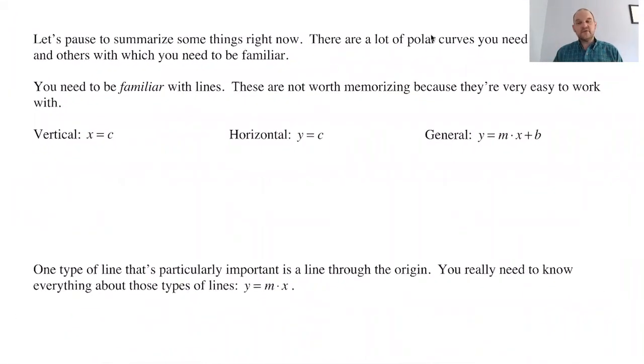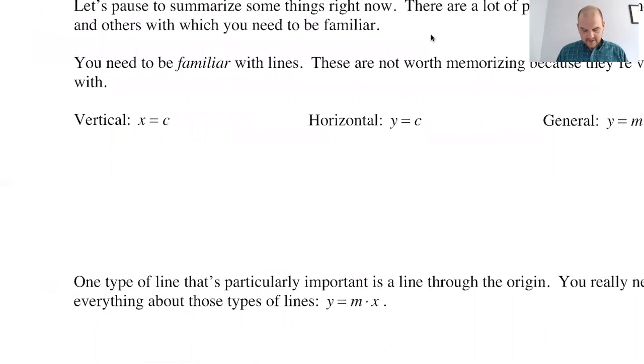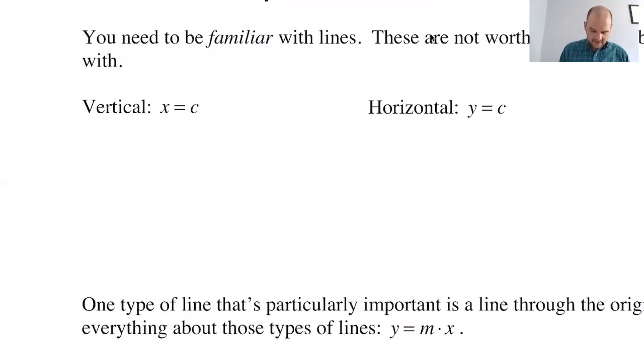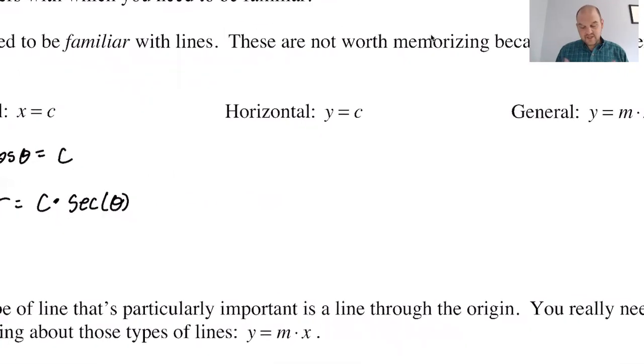So lines are less important than you might think. You think they're important because you're living in a rectangular world where x equals a constant, y equals a constant. Those actually define our rectangular coordinate system. They don't mean as much in polar because you just don't run into them. We could say that r*cos(θ) = c, so r equals c divided by cosine, but I'm going to write it as c times secant of theta. Don't memorize that, but be aware of it. You see r equals something times secant, start thinking that's an x type thing.